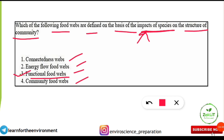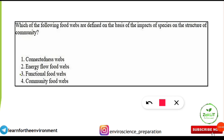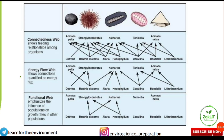Functional food webs are defined on the basis of impacts of one species on the structure of the community. Now let's understand the concept. The first type is the connectedness web — it shows who eats whom, that is the feeding relationship among organisms. It does not show the impact of one species on the community of an ecosystem; it simply shows the feeding kind of web.